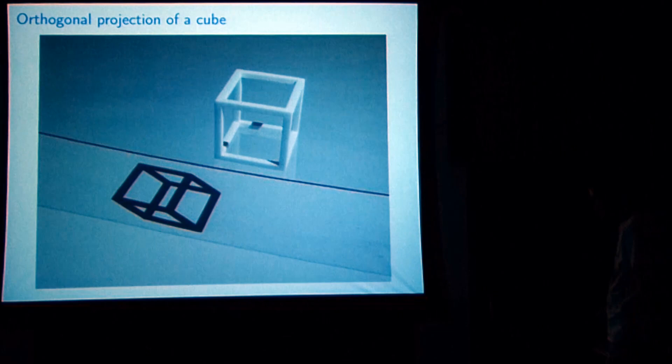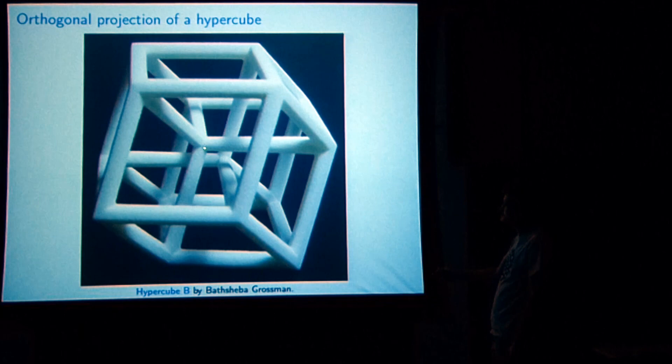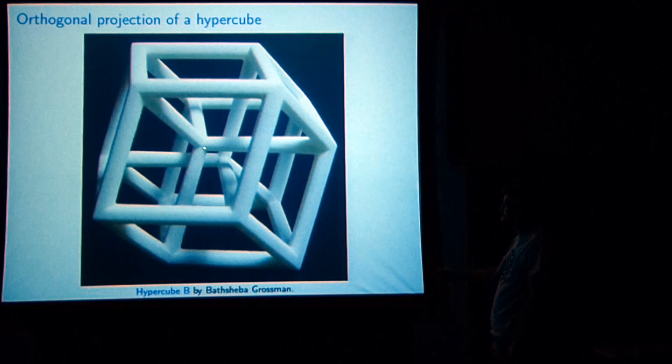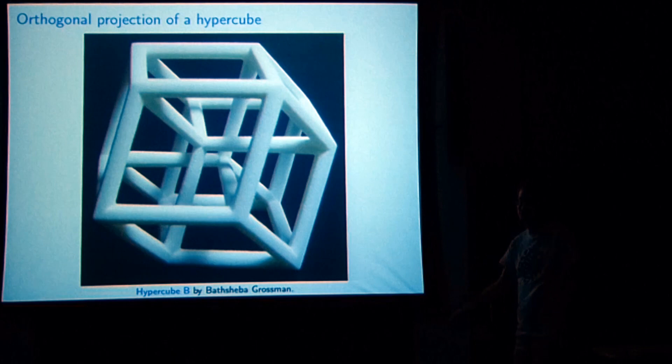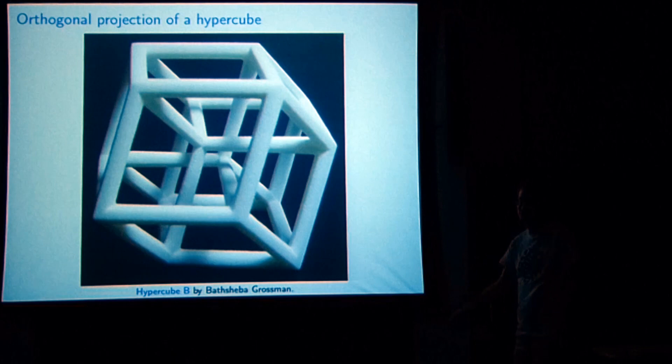We can do the same thing from four dimensions down to three dimensions. This is an orthogonal projection of the hypercube. You'll notice it has some of the same properties — here are two parallel lines, and those are really parallel in four dimensions as well. But we've still got problems: this edge is crashing through this face, which isn't a feature of the true four-dimensional object. This piece is called Hypercube B by Bathsheba Grossman, a mathematical artist who works extensively in 3D printing.